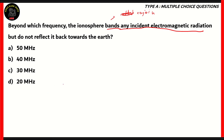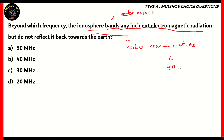When it comes to the ionosphere, it reflects back frequencies which are used for radio communications. Local radios use the ionosphere itself instead of satellites, and that happens at a maximum of 40 MHz. So that means option B, 40 MHz, is the right answer.